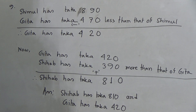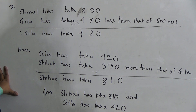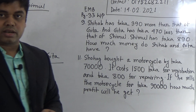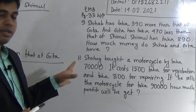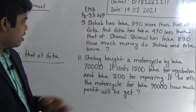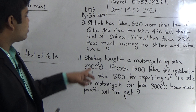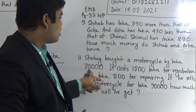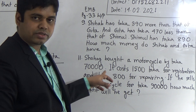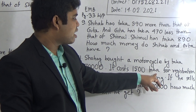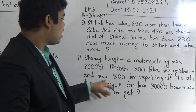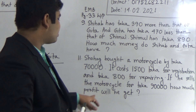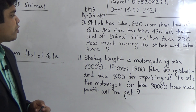I hope you have understood this math. Next we shall solve question number 11. To solve it, first we make a plan, and to make a plan we read the question. My dear students, it is very necessary to read a question before starting to solve it. Problem 11: Shohag bought a motorcycle for taka 70,000. It cost 1,500 taka for registration and taka 800 for repairing.